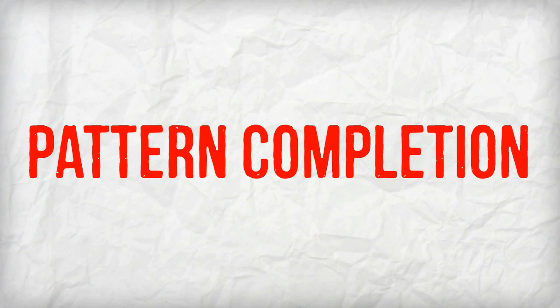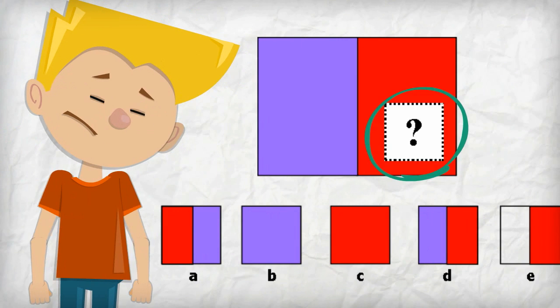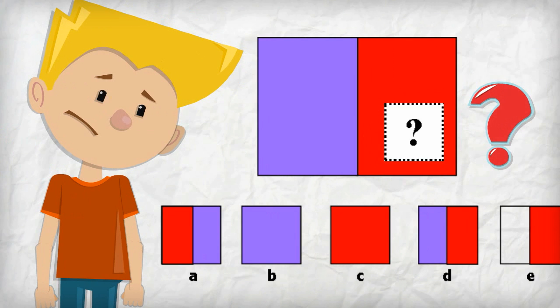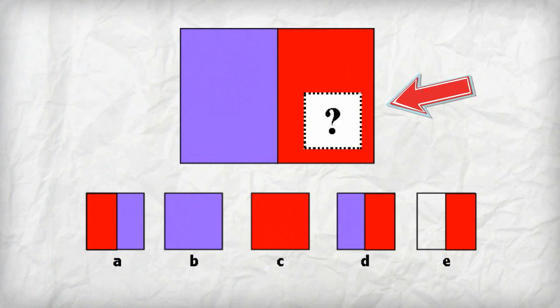Here's an example of pattern completion. The child will see a rectangular design containing a missing piece. To solve the puzzle, the child must look at the design with a missing piece and select the answer that completes the pattern. In this example, the missing piece is a solid red box, so answer choice C is the correct answer.